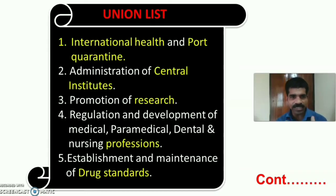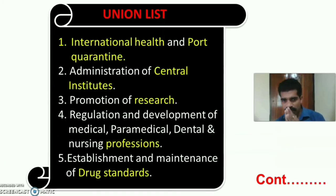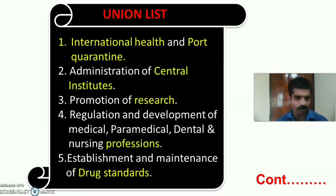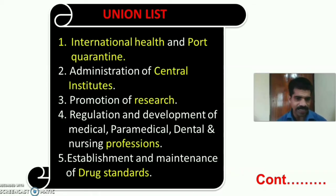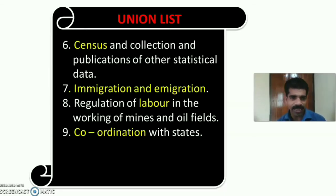The Union List functions are: (1) International Health and Port Quarantine; (2) Administration of Central Institutes of Health such as All India Institute of Hygiene and Public Health, Kolkata, and All India Institute of Medical Sciences, Delhi; (3) Promotion of Research in India; (4) Regulation and Development of the Medical, Paramedical, Dental, and Nursing Professions; (5) Establishment and Maintenance of Drug Standards; (6) Census — conducted once every ten years — and Collection and Publication of Statistical Data; (7) Immigration and Emigration.